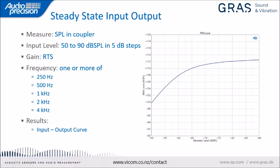The steady state input-output measurement — what we'd call a stepped level sweep — involves setting the hearing aid to reference test setting, generating a sine signal at one or more frequencies (250, 500, 1k, 2k, or 4 kHz), stepping the level in 5 dB steps from 50 to 90 dB SPL, and measuring the input-output curve. For hearing aids with automatic gain control, the response is linear up to about 57 dB SPL, then rolls off as the AGC circuit engages.